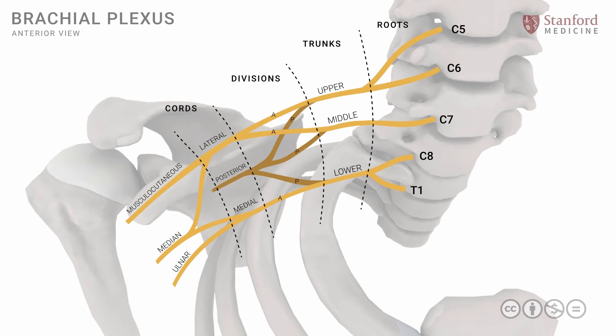Let's focus now on the posterior cord. We have three important branches to review from the posterior cord. The first is known as the thoracodorsal nerve. Another branch from the posterior cord is known as the axillary nerve. The third and final important branch is known as the radial nerve. These three branches — the axillary, radial, and thoracodorsal nerves — all come from the posterior cord, which is ultimately formed by the posterior divisions, and they supply muscles on the posterior side of the upper limb.